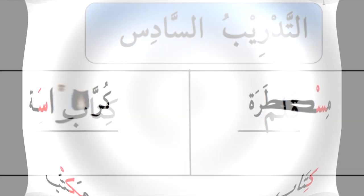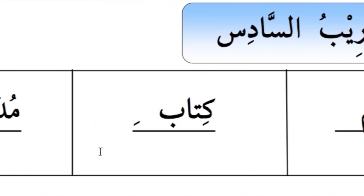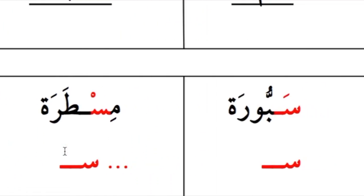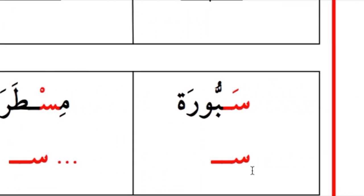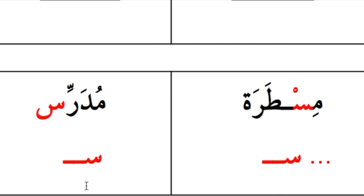مكتب. التدريب السادس: قلم — كتاب — مدرس. سا سبور. سا سين مستر. سا سين — مدرس.